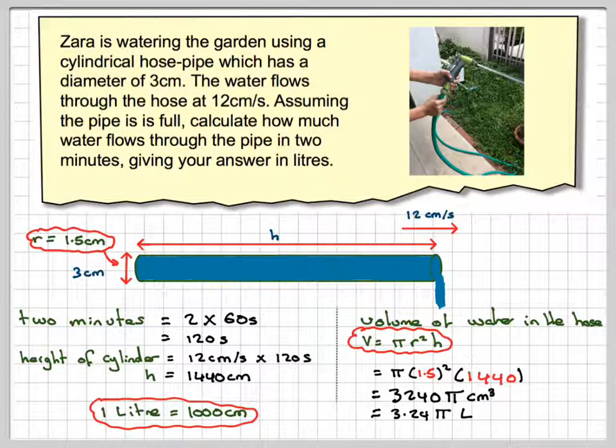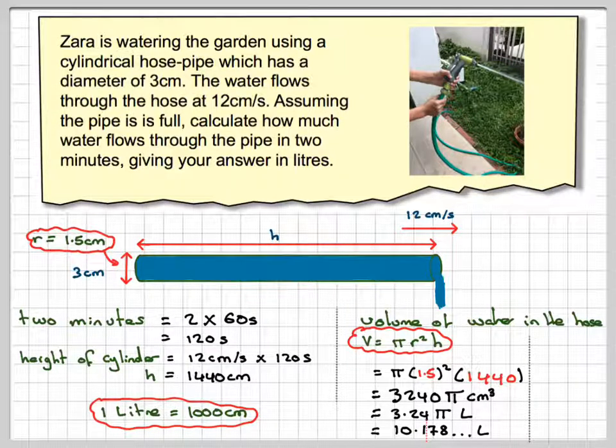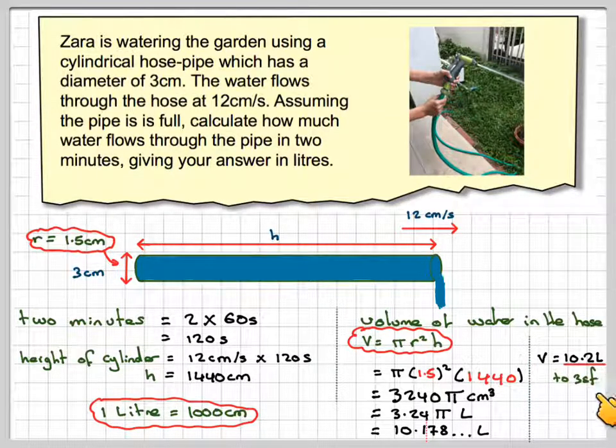And then, 3.24 pi will give you 10.178 liters. Now, to three significant figures, that's the first, second, third. That 7 will make that 1 a 2. So, the answer will be, the volume will be 10.2 liters to three significant figures.